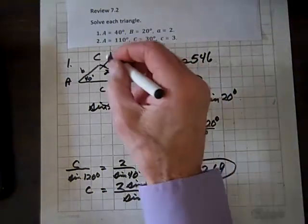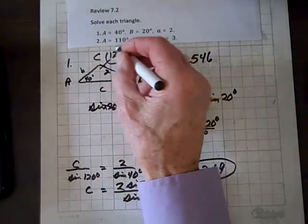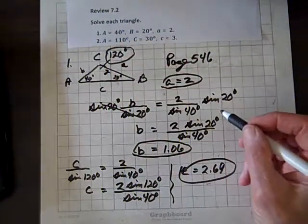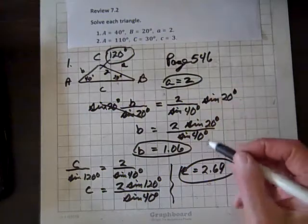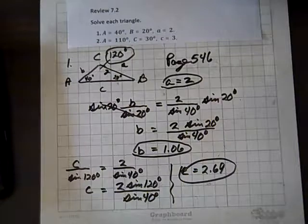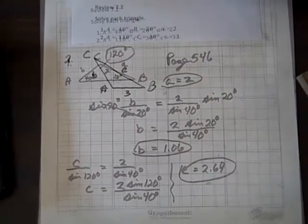Now we know the measures of all the angles and sides. One angle was 120 degrees, the others were given. A is 2, B is 1.06, and C is 2.69, and we're done.